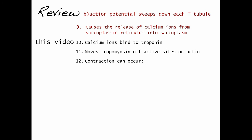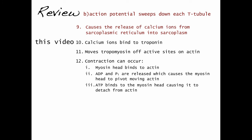However, the steps that are repeated over and over in a contraction are that the myosin head will bind to actin, ADP and phosphate are released, which will cause the myosin head to pivot, moving actin towards the center line. ATP will then bind to myosin, causing it to detach from actin, and the energy released from the hydrolysis of ATP is used to reset the myosin head so that it can rebind to actin.